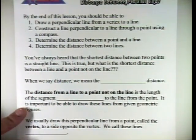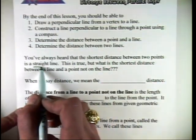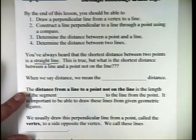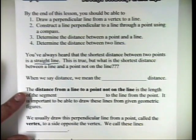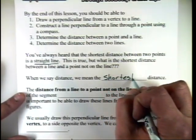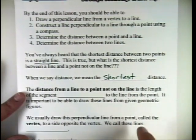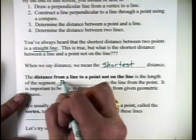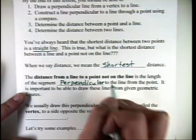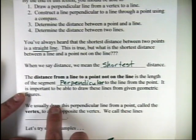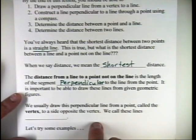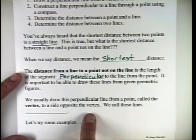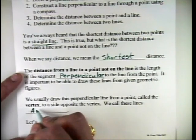You've probably always heard that the shortest distance between two points is a straight line — it's almost cliché. But what is the shortest distance between a line and a point not on the line? In mathematics and geometry, when we say the distance without qualifying what type, we mean the shortest distance. The distance from a line to a point not on the line is the length of the segment that is perpendicular to the line from that given point. We usually draw this perpendicular line from a vertex of a geometric figure to the opposite side, and we call those lines altitudes.